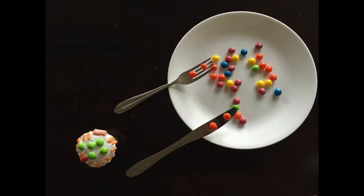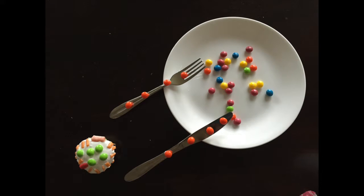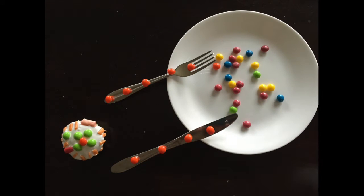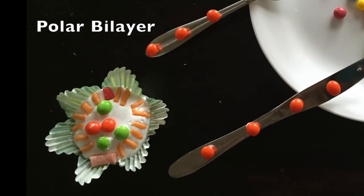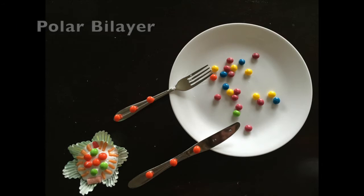As HDL picks up cholesterol esters represented by our orange skittles, as well as more phospholipid and cholesterol, a polar bilayer is formed and our HDL is now considered mature.